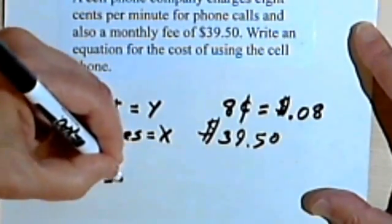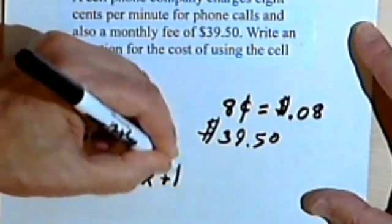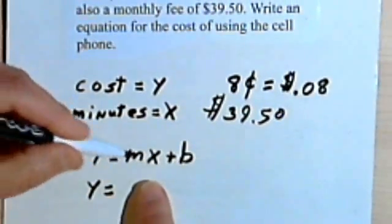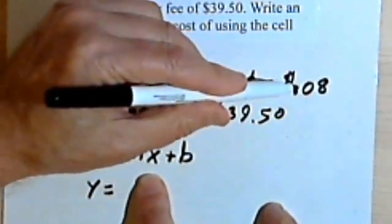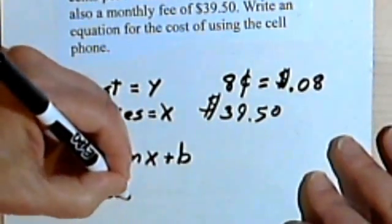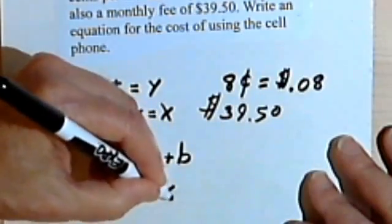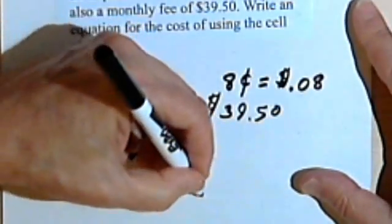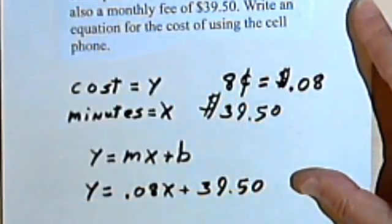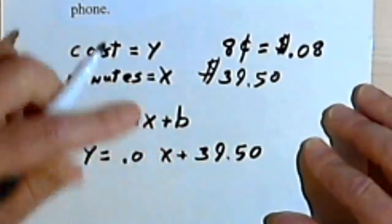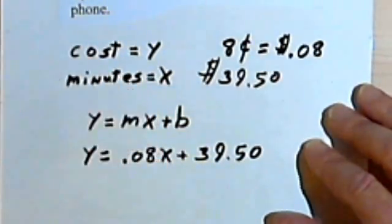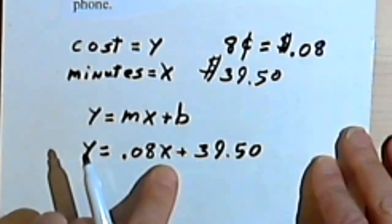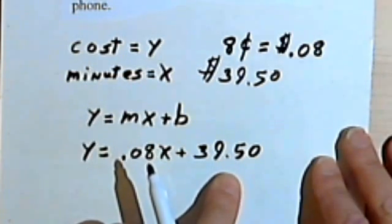Let's write our basic, our general formula: y equals mx plus b. So we've got y, the cost, and to get to the cost is 8 cents times the number of minutes. So that's going to be 0.08 times x for the number of minutes plus the basic monthly fee of 39.50. Let me fix that 8 and then we're done. So we've got y, the cost, equals 8 cents times the number of minutes plus the basic monthly fee, 39.50.